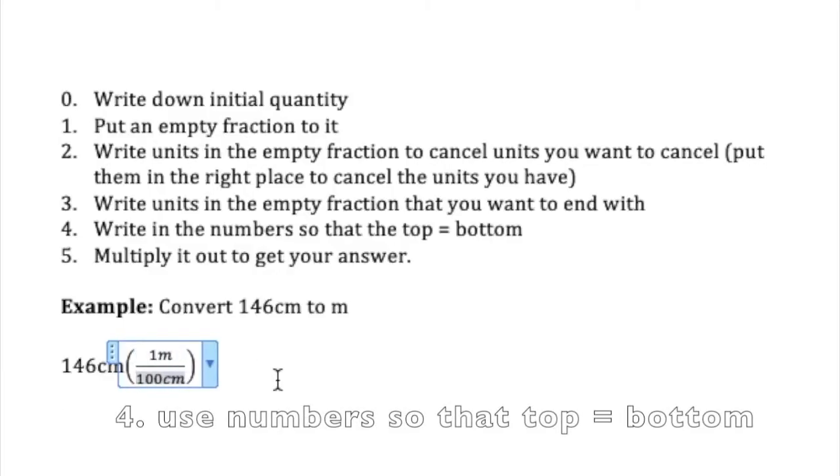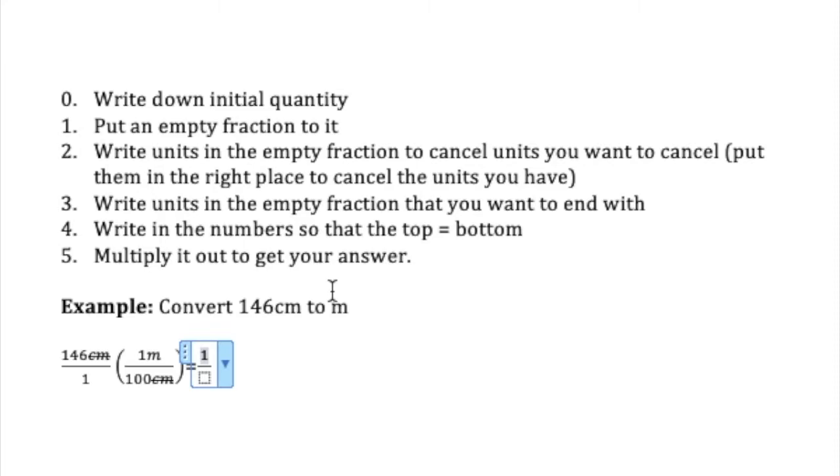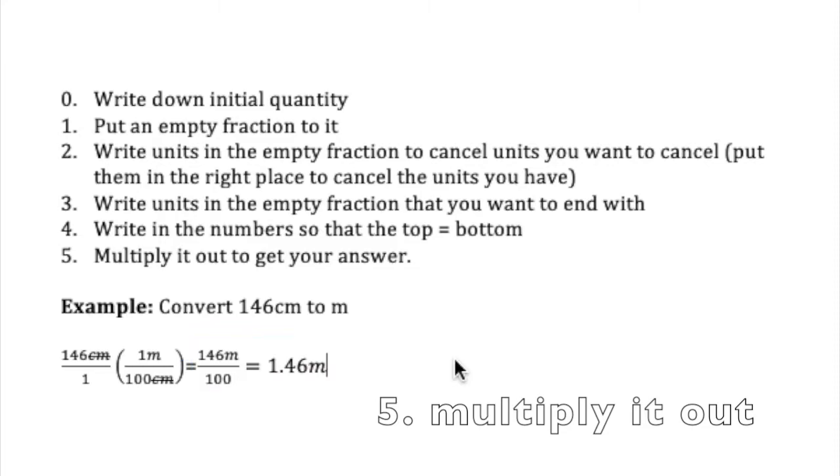So one meter is equal to 100 centimeters. So write it in there. The centimeters will cancel. Once again, I will write the 146 centimeters as 146 over 1 just so that you can see how it multiplies out. And you get 1.46 meters. And so we've just learned that 146 centimeters equals 1.46 meters.